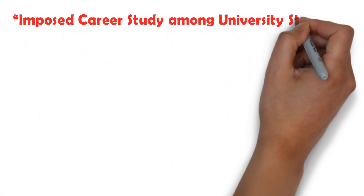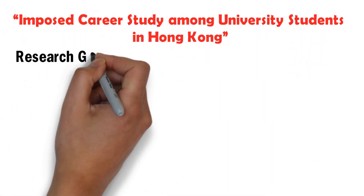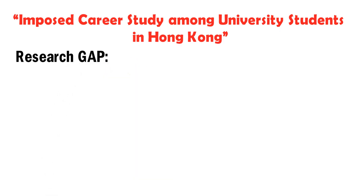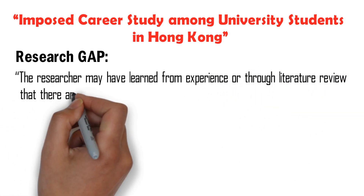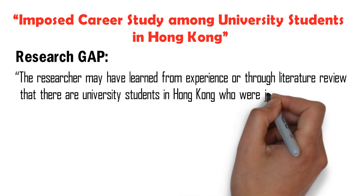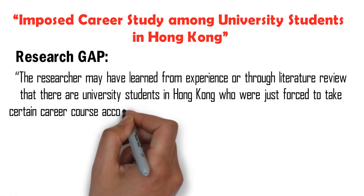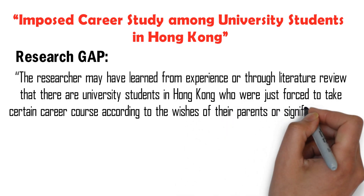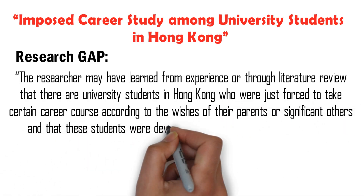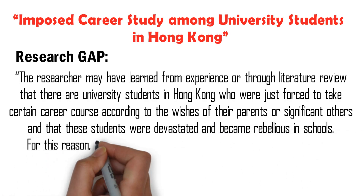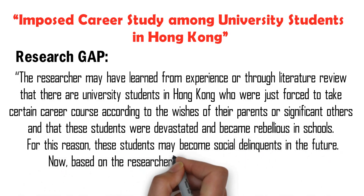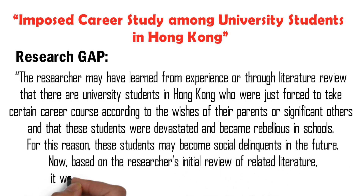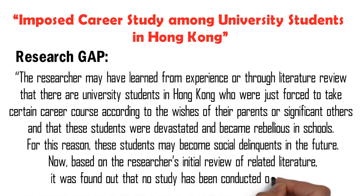So what could possibly be the research gap of this example? Based on the research aim, we can have, for example, the following idea: The researcher may have learned from experience or through literature review that there are university students in Hong Kong who were just forced to take a certain career course according to the wishes of their parents or significant others, and that these students were devastated and became rebellious in schools. For this reason, these students may become social delinquents in the future. Based on the researcher's initial review of related literature, it was found that no study has been conducted on this topic.